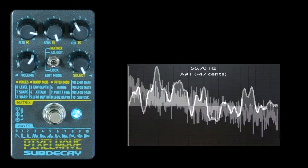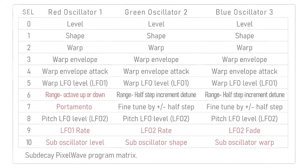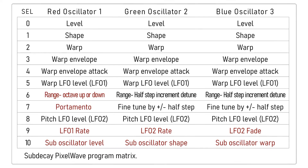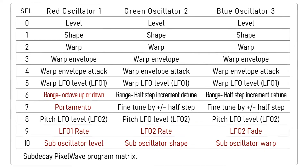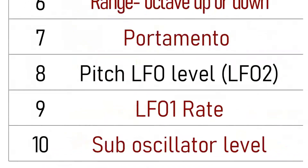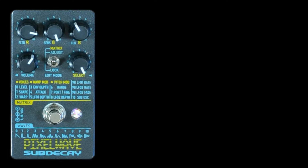For programming, I'm changing the edit mode to matrix. For most parameters, the R, G, and B knobs control their corresponding oscillators. The exceptions are shown in red. This includes LFO 1's rate, which can be used to modulate any or all of the three oscillators. In matrix mode, the bypass switch is used to solo oscillators. Let's see what the red oscillator is doing.